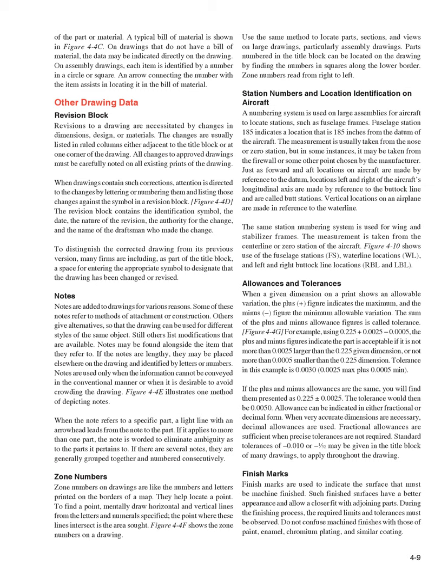Revision block: Revisions to a drawing are necessitated by changes in dimensions, design, or materials. The changes are listed in ruled columns either adjacent to the title block or at one corner of the drawing. All changes to approved drawings must be carefully noted on all existing prints. Changes are lettered or numbered and listed against the symbol in a revision block, which contains the identification symbol, the date, the nature of the revision, the authority for the change, and the name of the draftsman who made the change. Many firms include a space in the title block for a symbol designating that the drawing has been changed or revised.